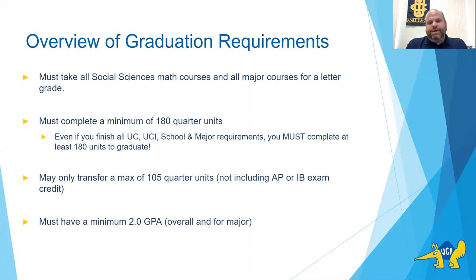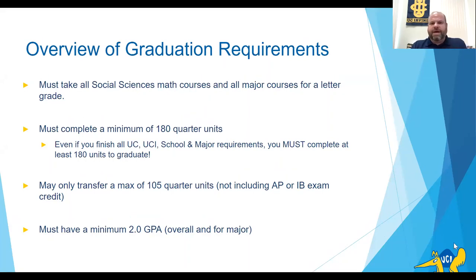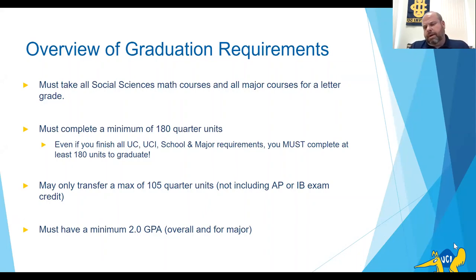So, graduation requirements. There are certain things that have to be done in order for you to get a degree from UCI. Some are related to your major and some are related to units. The first thing you need to know is that math courses required in the School of Social Sciences and all courses for your sociology major have to be taken for a letter grade option. Make sure you're taking all those courses for a letter grade.